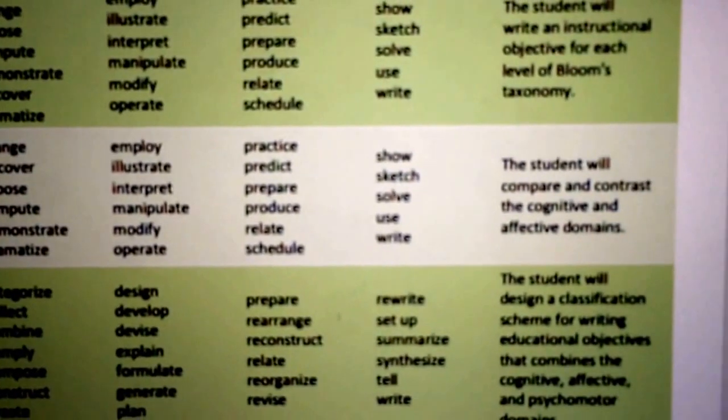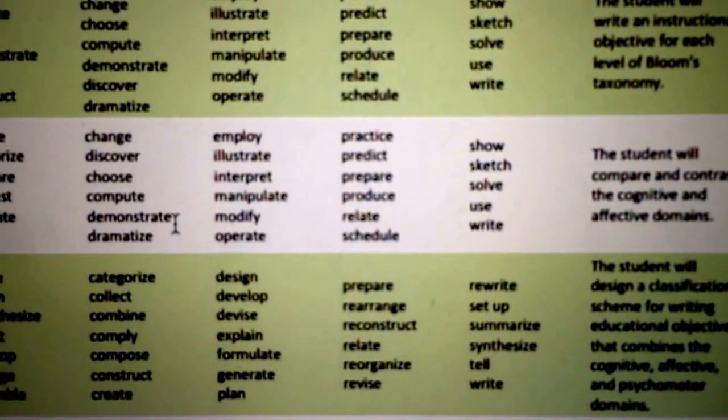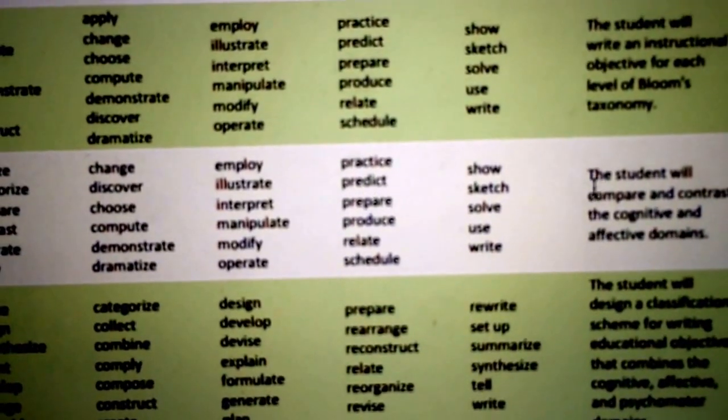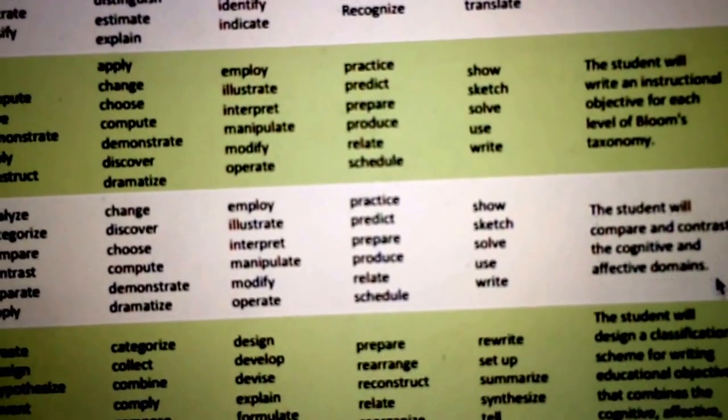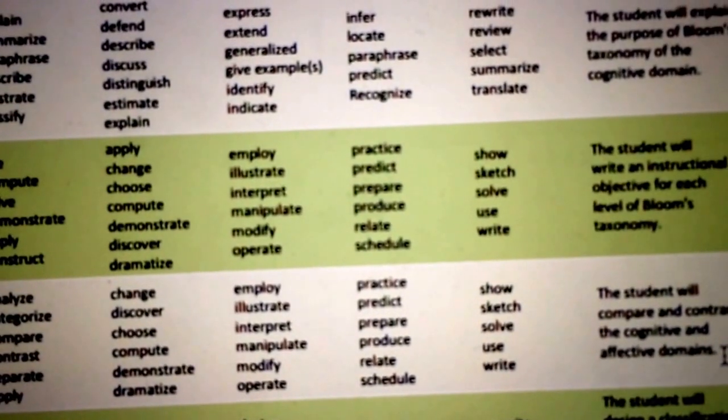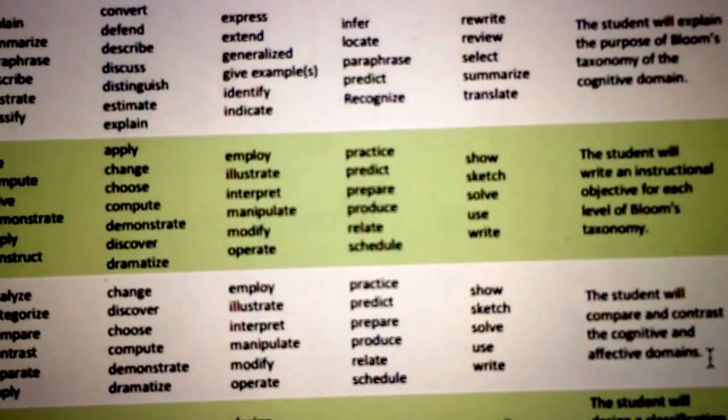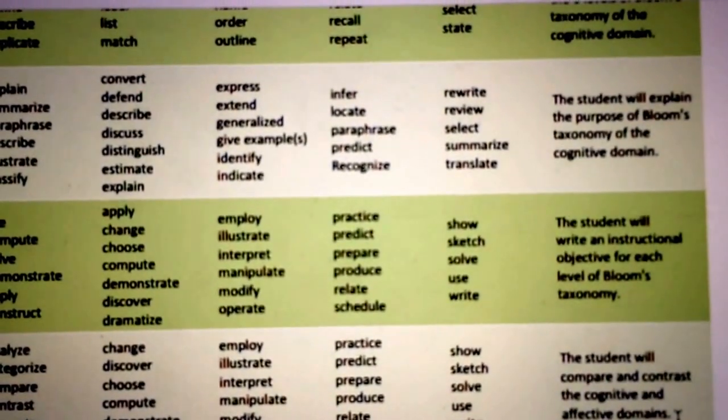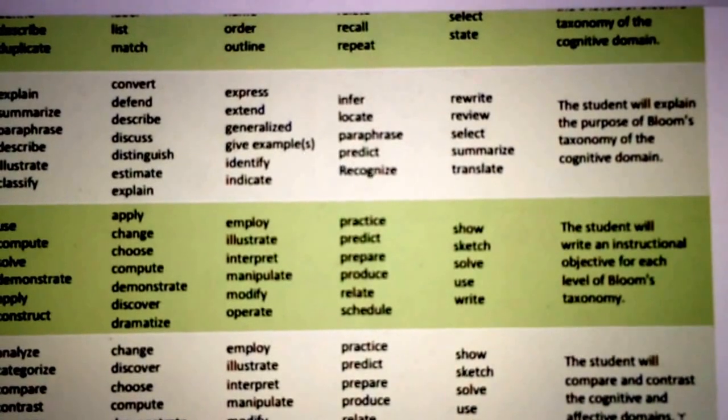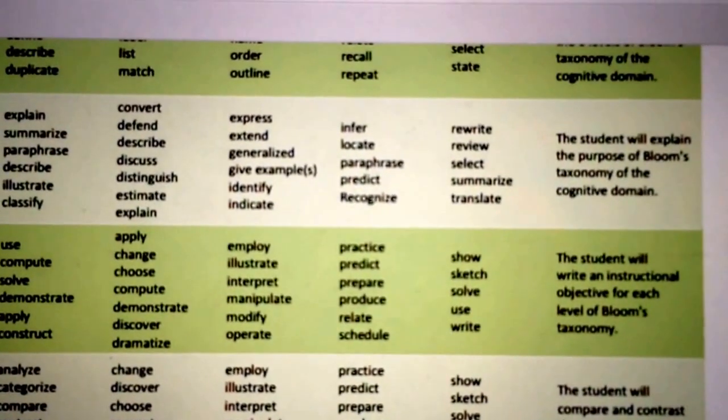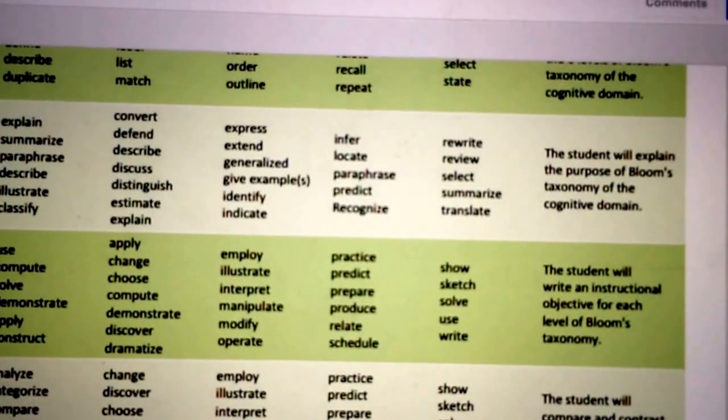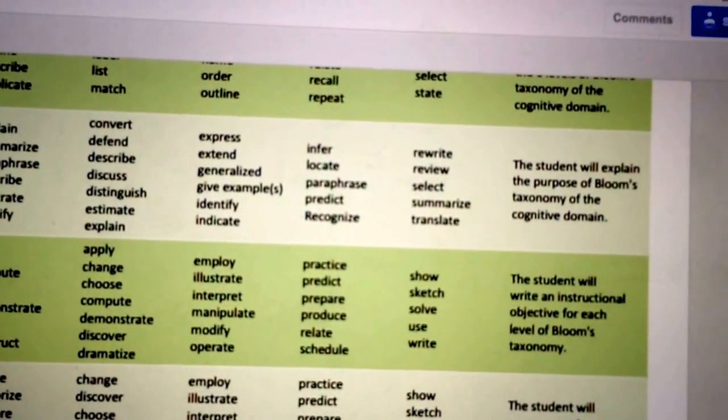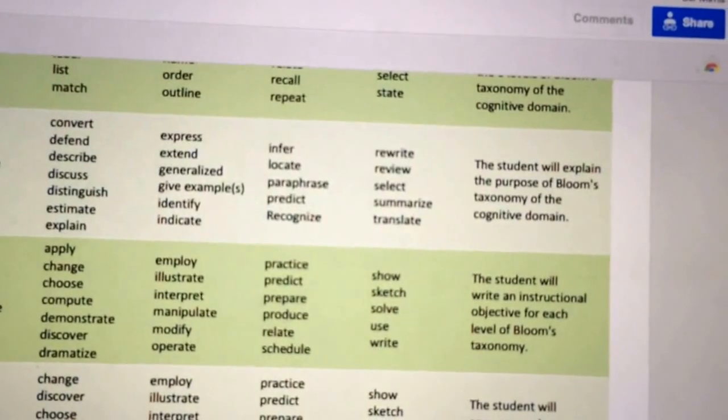As you read along and come over here, it gives you some sample behaviors that would fall into that. So for instance, it mentions right here that the student will compare and contrast the cognitive and affective domains. And so that might begin to help you also identify the Bloom's levels that go along with objectives, but it can also be helpful as you begin to develop the assessment that goes with it.